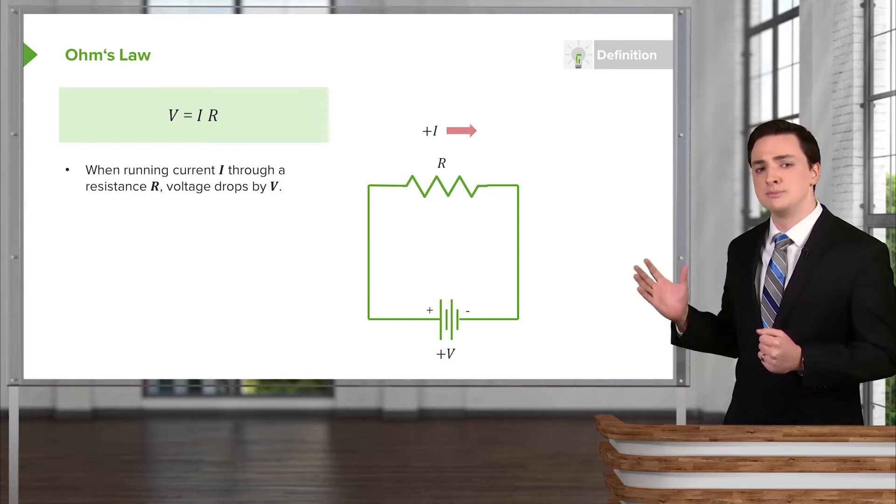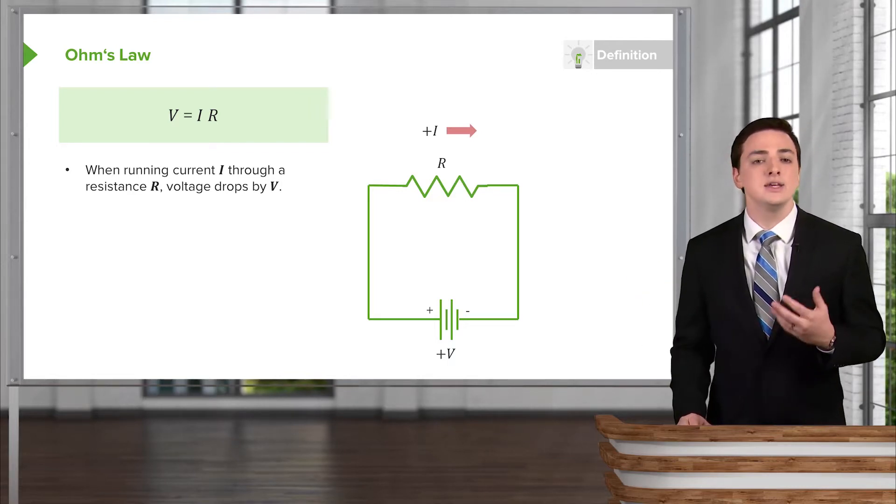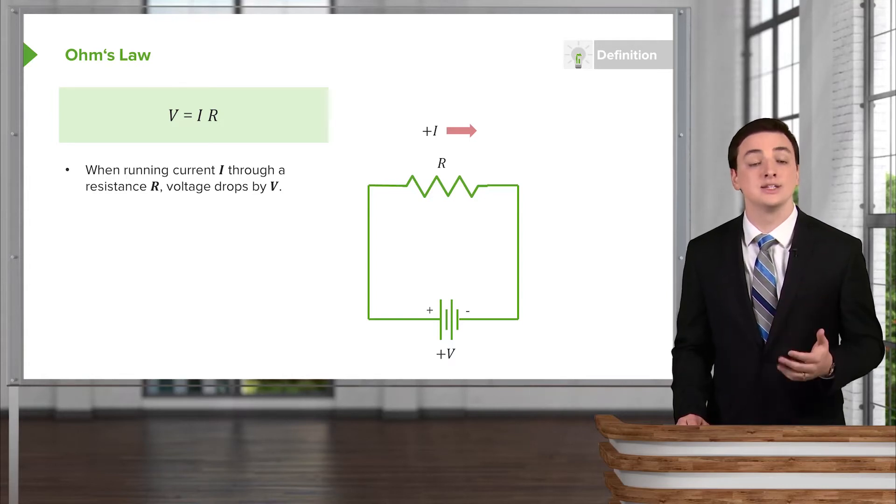We symbolize resistors by the symbol shown here, which is sort of a jagged line. It's anything in your circuit that tries to slow down the flow of current as it goes through your circuit.